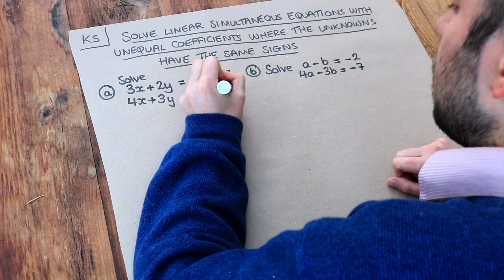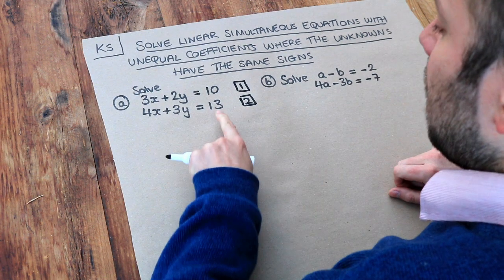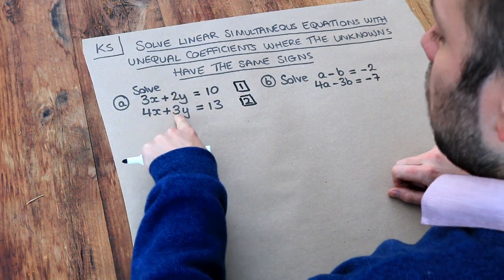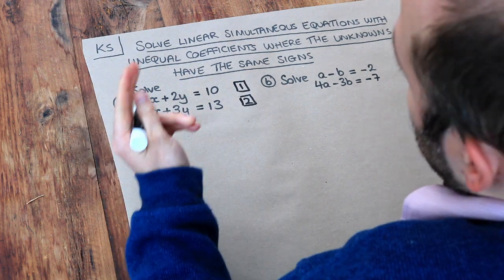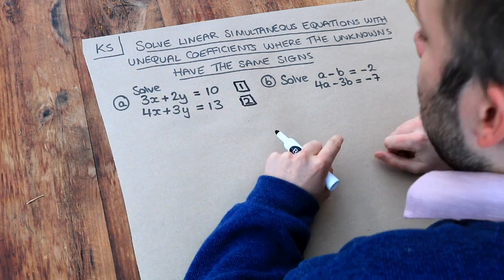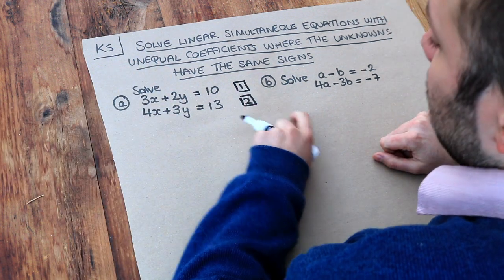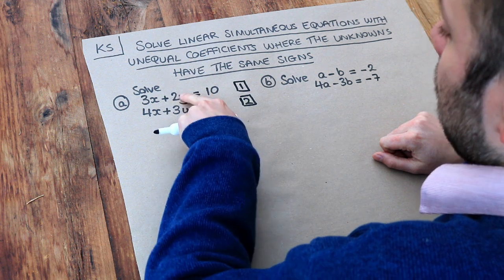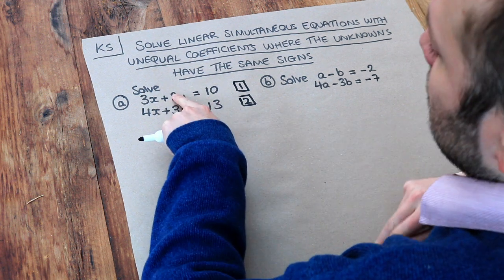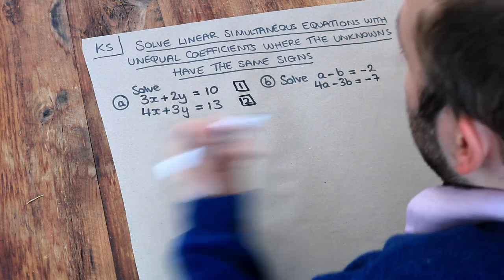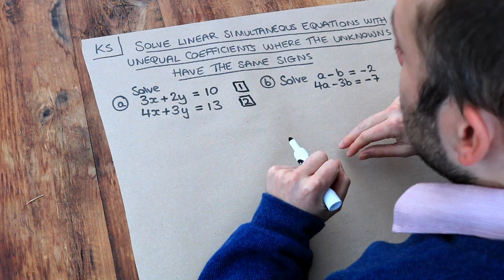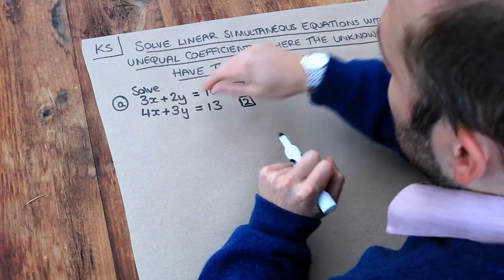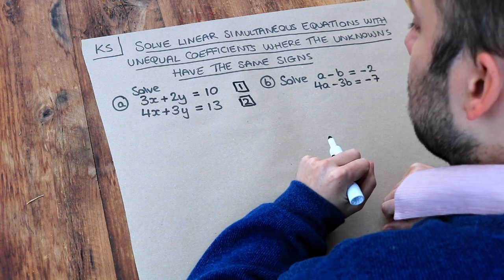So we number these two equations 1 and 2. The problem is, if we add these two equations, we'll have 2y plus 3y is 5y. That doesn't make them disappear; we've still got that 5y there. And if we subtract the two equations, let's just say we did the second equation minus the first, we get 3y minus 2y is equal to y. Again, we haven't made it cancel. We need these numbers to be the same such that either adding or subtracting them is going to make them disappear.